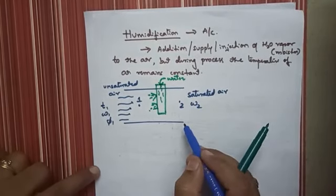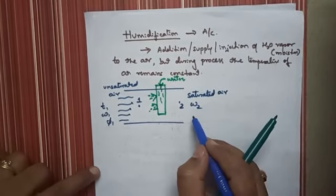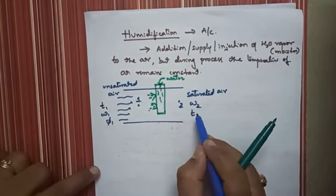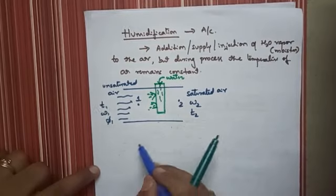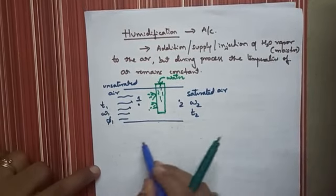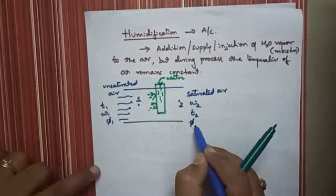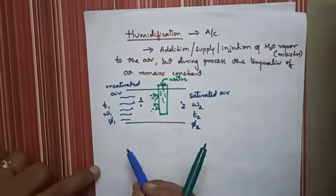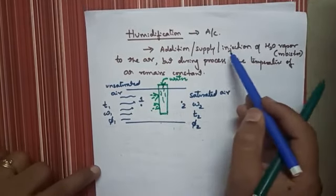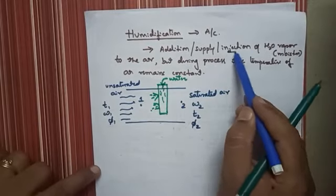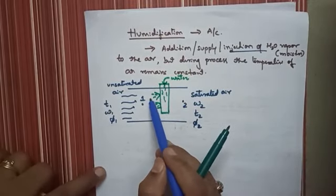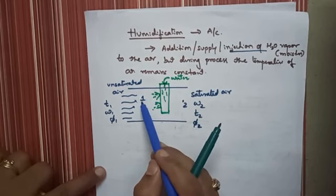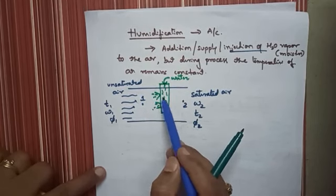At point number two, the air becomes saturated. The moisture content at point two is omega 2, the dry bulb temperature is T2, and the relative humidity is phi 2. During humidification, water is supplied and injected, it mixes with the unsaturated air, and the air becomes saturated.